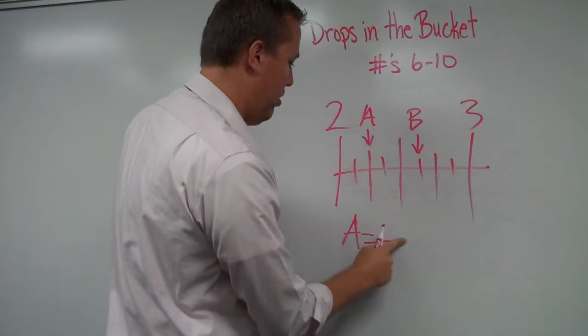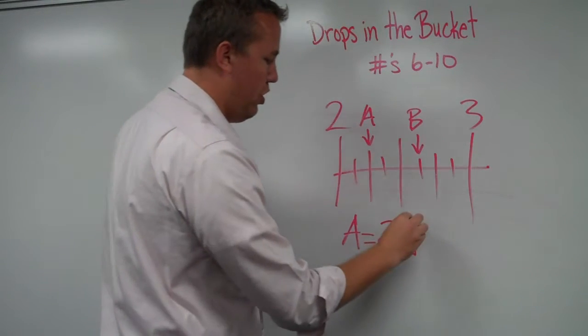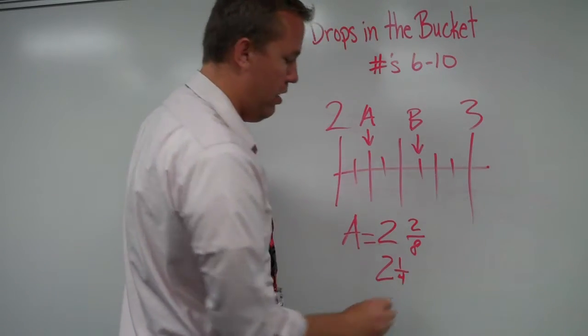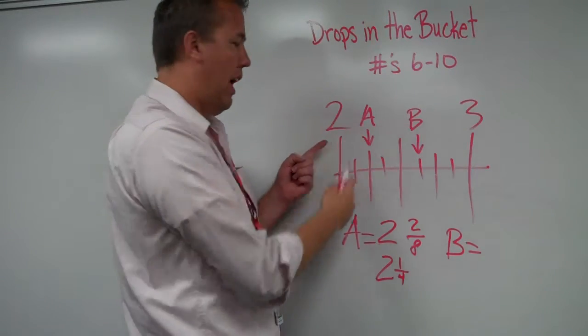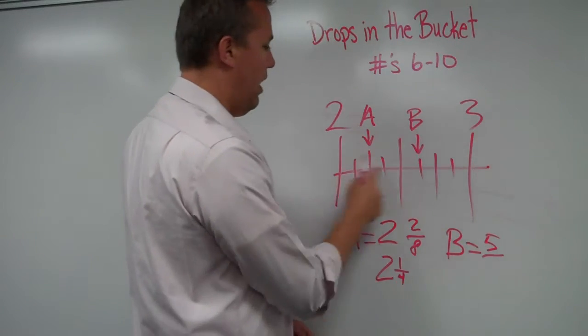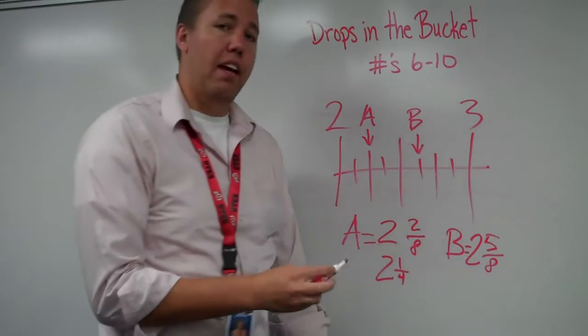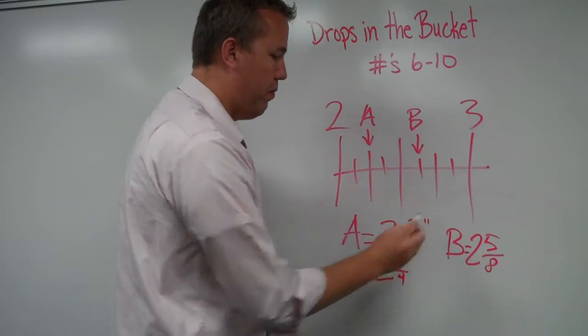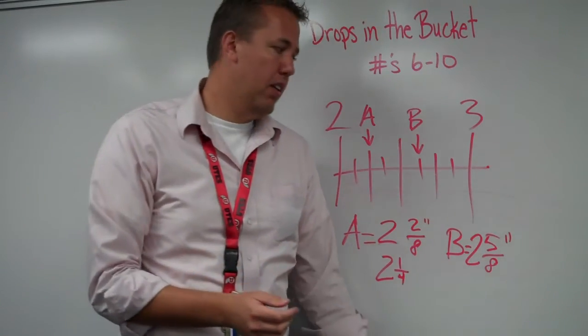So A equals two and something eights. Zero, one, two. Two and two eighths. If you can simplify it, please do. Then B is at two holes and one, two, three, four, five out of eight parts. So I messed up again. Two holes and five-eighths. Because it is asking for inches, please put two little marks. Looks like a parenthesis, end parenthesis. After that, that signifies inches.